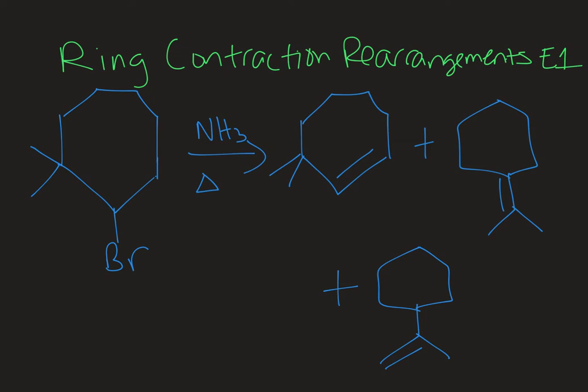We're starting out here with a seven-membered ring. We've got a leaving group bromine on there. This is an elimination reaction so we can predict what products we would see by labeling the carbon with the leaving group on it, the alpha carbon.